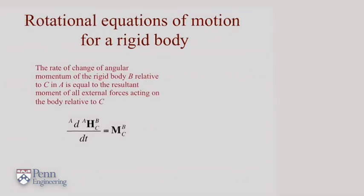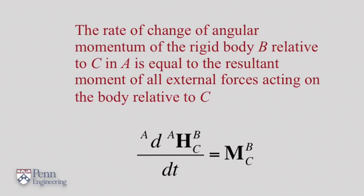Let's derive the rotational equations of motion for a rigid body. For linear motion, we considered the linear momentum of the rigid body and its derivative. For rotational motion, the analogous quantity to consider is the angular momentum.